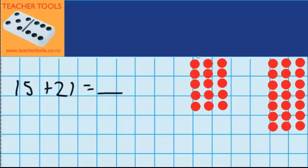Now you can see over here I've set out both of these amounts as arrays. I've got my 15 here, it's 3 counters wide and 5 counters down. And over here my 21, I've set that out by doing 3 counters across and 7 counters down.